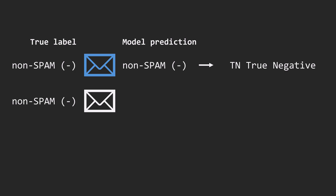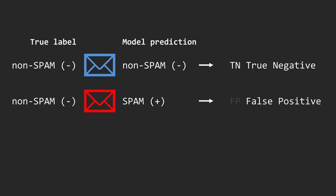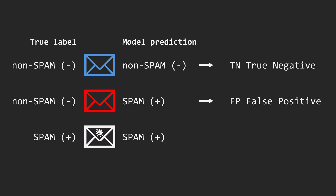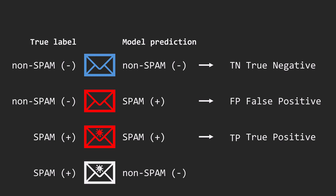Second, a regular email incorrectly classified as spam. And this is false-positive, as the model made a mistake with a positive prediction. Third case is a spam email correctly identified, so this is a true positive.